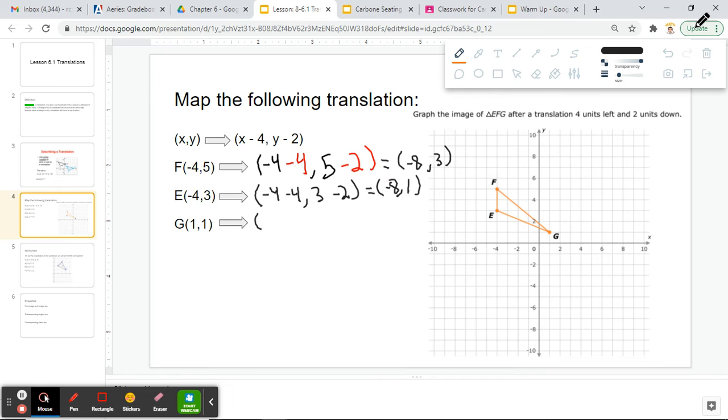And lastly, I have my point (1, 1). Since my x is 1, I need to do 1 minus 4, and since my y is 1, I need to do 1 minus 2. 1 minus 4 will give me negative 3, and 1 minus 2 will give me negative 1.